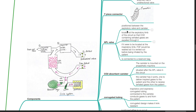The APL valve is positioned between the expiratory valve and the canister. It is located at the expiratory limb of the circuit so that CO2-containing exhaled gases are expelled through it. If it were located at the inspiratory limb, fresh gas flow would be wasted as it is vented out before being inhaled by the patient. The APL valve is connected to a reservoir bag.